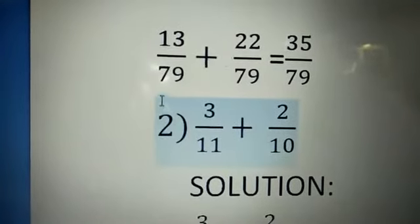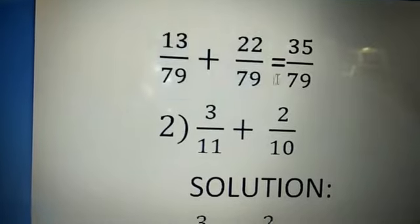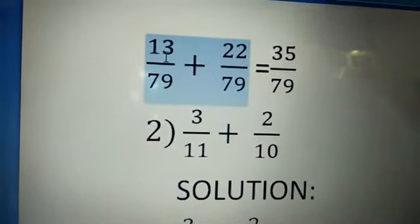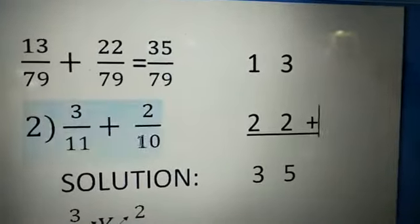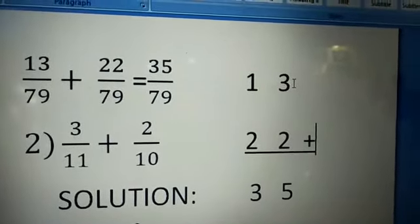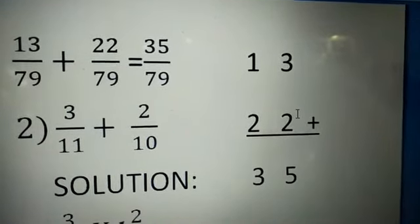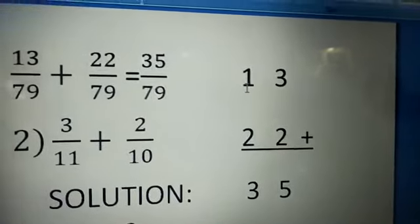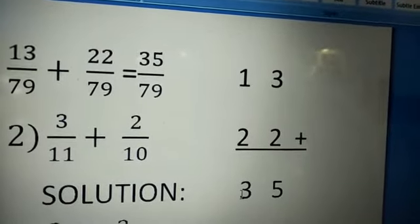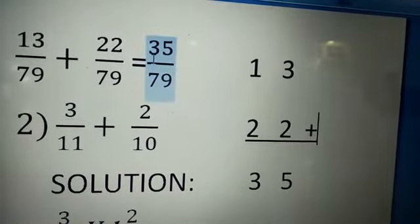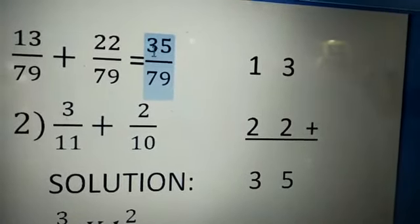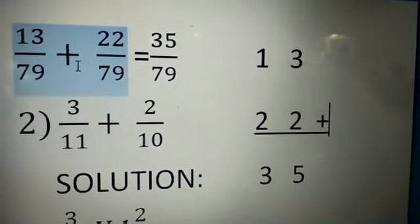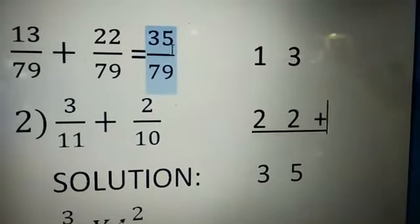So, 13 divided by 79 plus 22 divided by 79. Both denominators are the same, so I write down the same denominator 79, and I need to add 13 and 22. So 13 plus 22: 3 in the mind, take 2 fingers — 4, 5 — write down 5. Then 1 in the mind, take 2 fingers — 2, 3 — so 35. The numerator is 35. So 35 divided by 79 is the answer: 13/79 + 22/79 = 35/79.